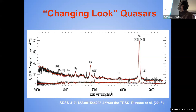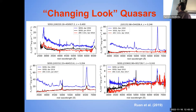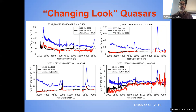Some active galactic nuclei change pretty radically. Here's an example of a changing-look quasar: a typical quasar spectrum with broad H-alpha and broad H-beta, but in a later spectroscopic epoch the broad lines have essentially disappeared, leaving only narrow line emission. In more examples from a paper by John Runnoe, the blue quasar continuum essentially disappears along with the broad lines, and what you see is basically the spectrum of the host galaxy without the AGN signatures.